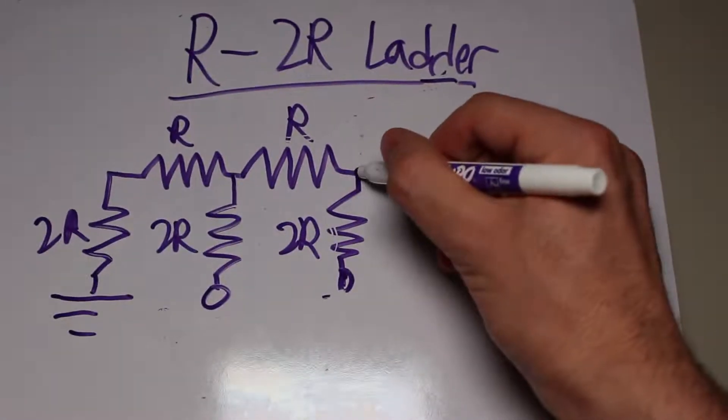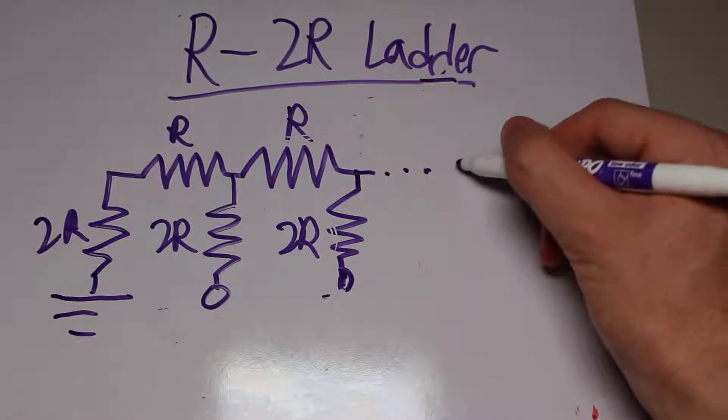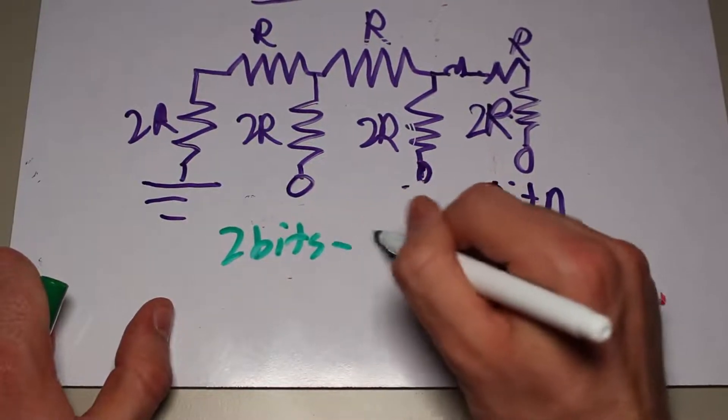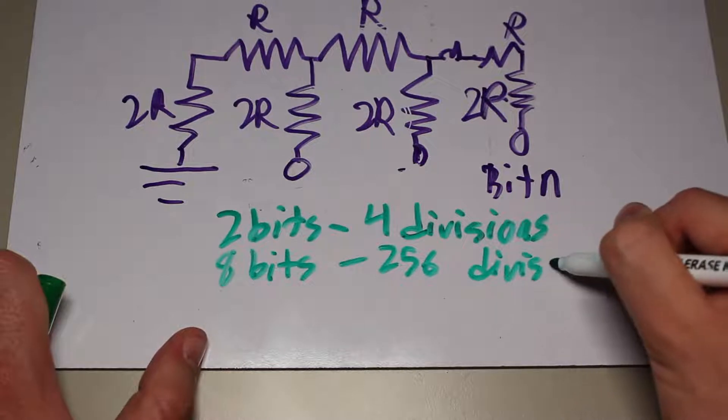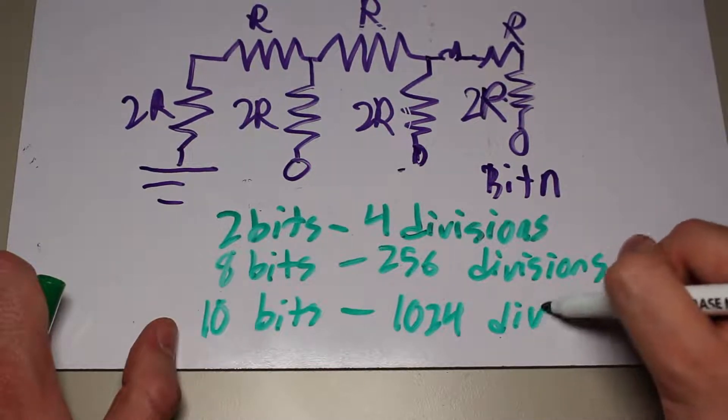The more bits you add, the more voltage steps you can create using the DAC. So in other words, you'll have a higher resolution. With eight bits, you can make 256 different steps, and with 10 bits, you can make 1024 steps, and so on and so forth. Each extra bit you add doubles the resolution.